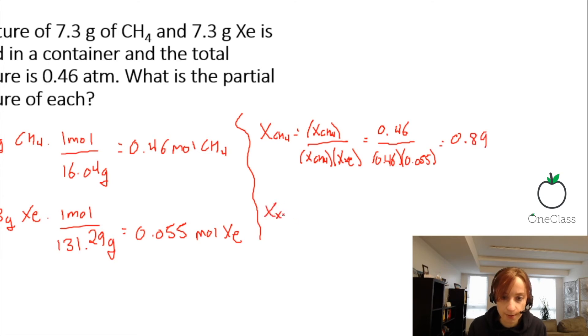Then we're going to do the same thing for xenon. So the mole fraction of xenon over the moles of methane plus the moles of xenon. So we have 0.055 divided by 0.46 plus 0.055, which gives 0.11.